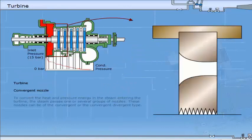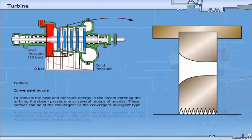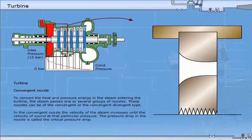To convert the heat and pressure energy in the steam entering the turbine, the steam passes one or several groups of nozzles. These nozzles can be of the convergent or the convergent-divergent type. In the convergent nozzle, the velocity of steam increases until the velocity of sound of that particular pressure.